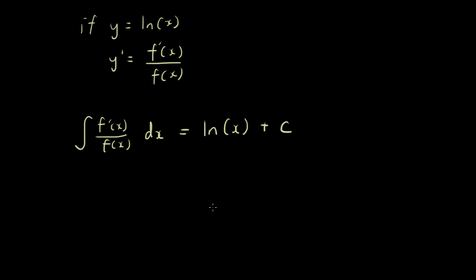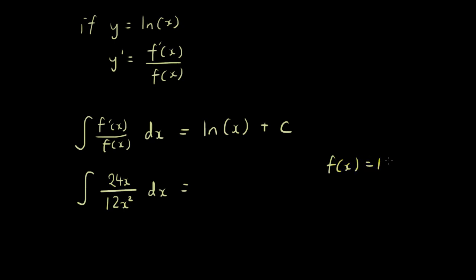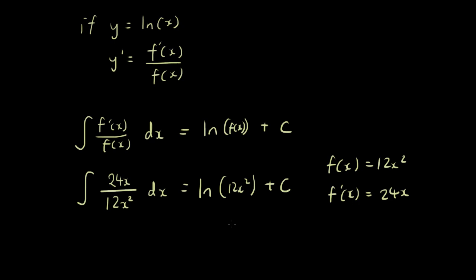Let's do a question. The integral of 24x over 12x². You can see the denominator is f(x) and the numerator is f'(x), which is 24x. It matches our equation. So using the formula, I can simply write ln(12x²) plus c. All done. How easy is that? Extremely easy.